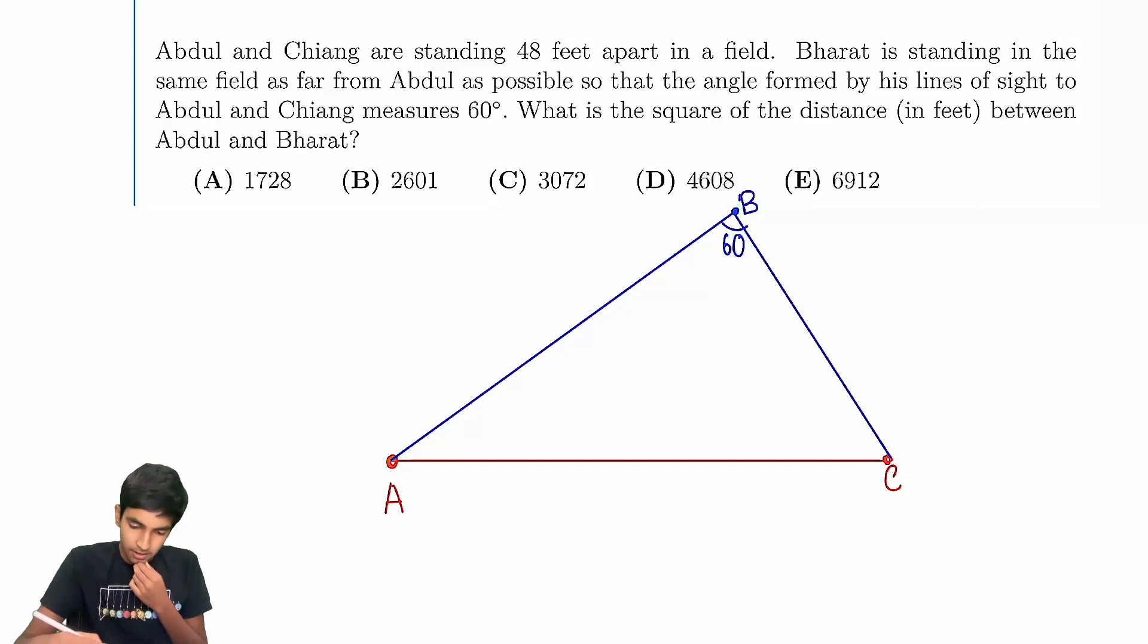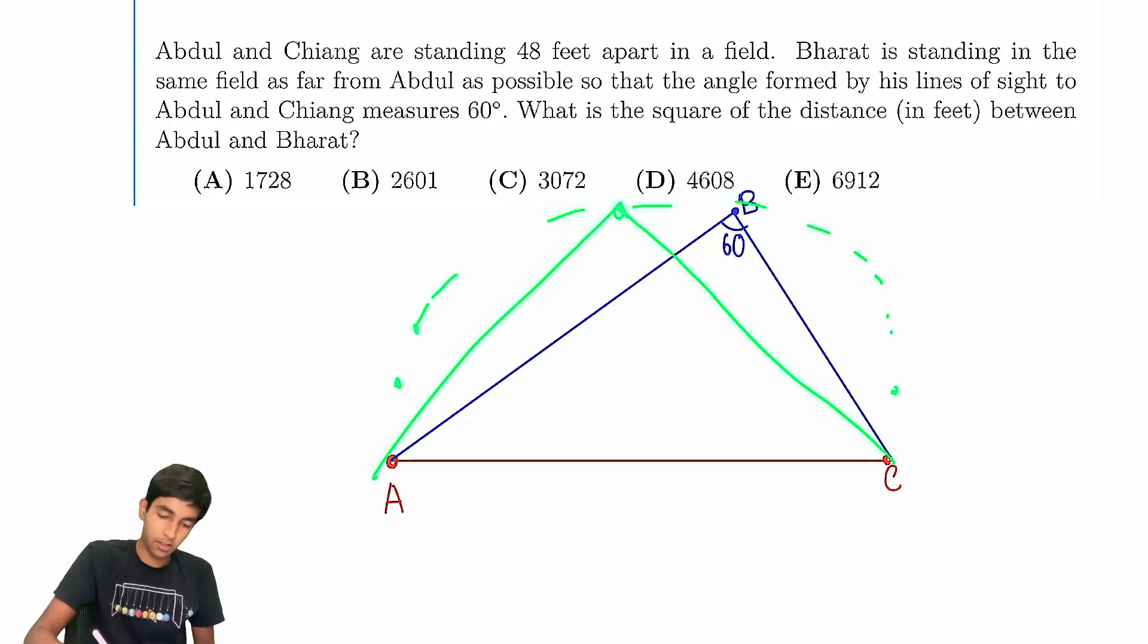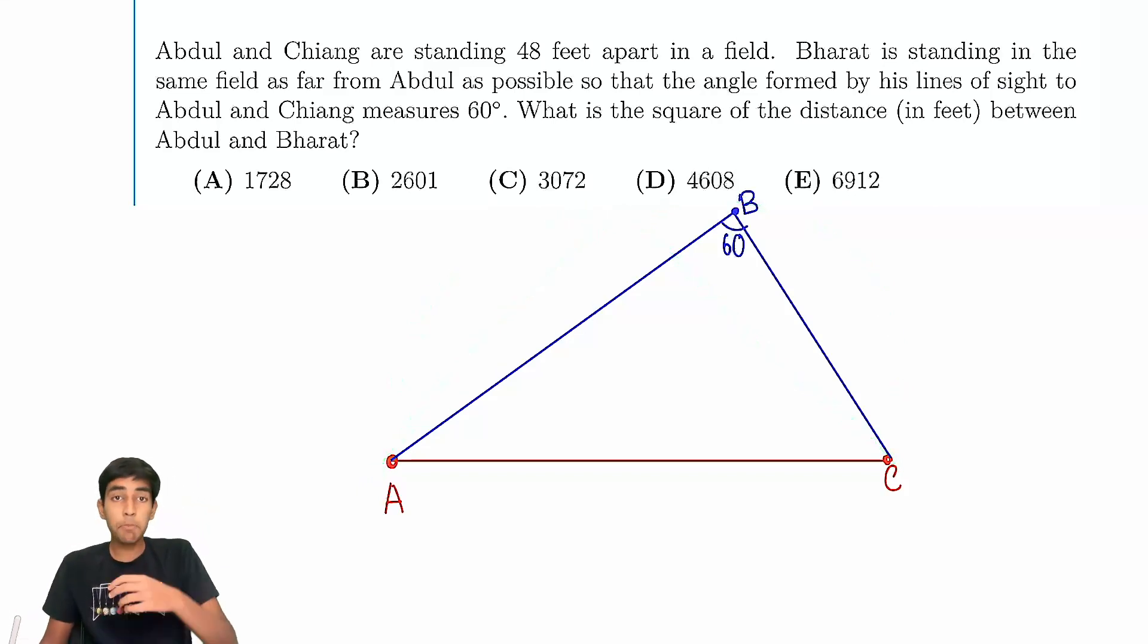So the first thing you should be like is, okay, we've got many possible choices for B, right? We can have something like here, we can have here, we can have an equilateral triangle, we can have here. There's many possibilities. Is there anything that could possibly represent all the possible locations for B, where the angle is always 120?